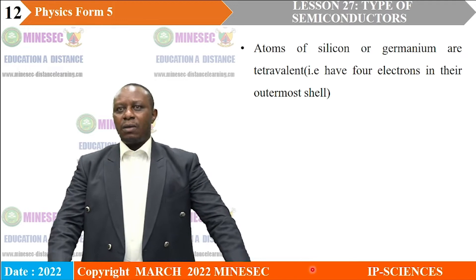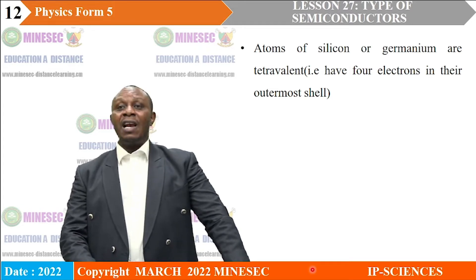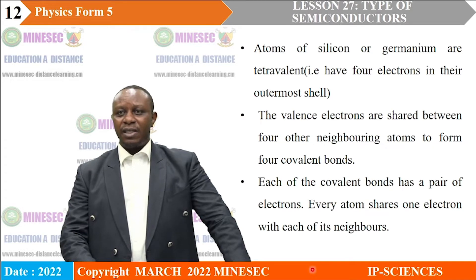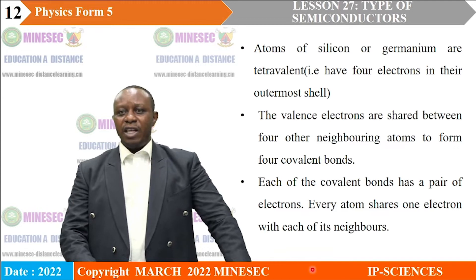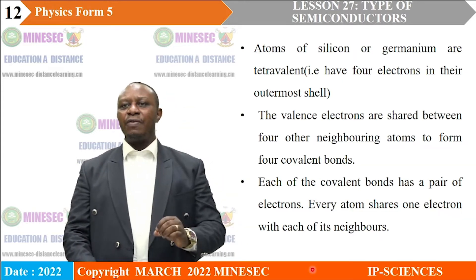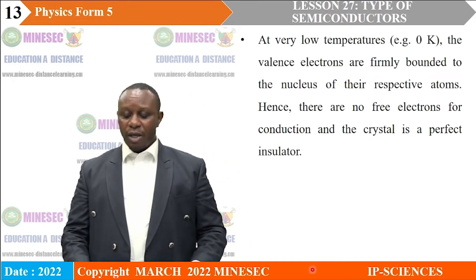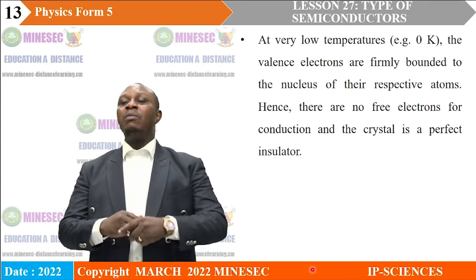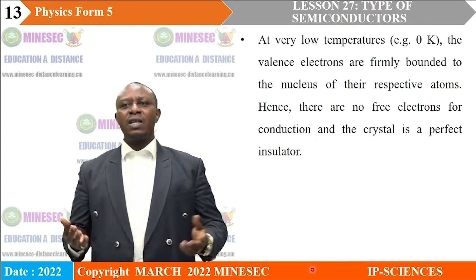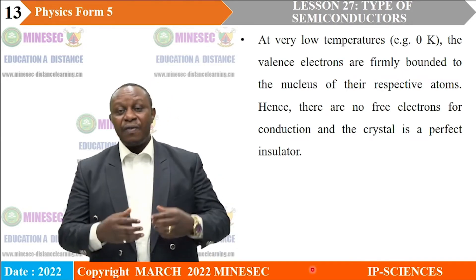Atoms of silicon and germanium are tetravalent, so all their electrons are involved in bonding, and each covalent bond has a pair of electrons. Every atom shares one electron with each of its neighbors. At very low temperatures — that is, at 0 Kelvin — the valence electrons are firmly bound to the nucleus and are not free to move about the crystal lattice. The material will behave like an insulator.